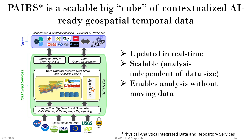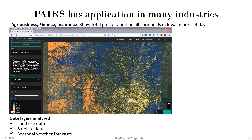Our analytics are scalable — meaning analysis is independent of data size — and it enables analysis without moving the data. Here is a simple example of a PAIRS query: 'Show me total precipitation on all corn fields in Iowa in the next 24 days.' This uses a variety of layers related to land use data, satellite data, and seasonal weather forecasts, all available as pre-curated PAIRS layers.